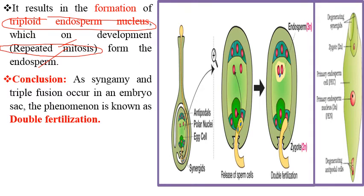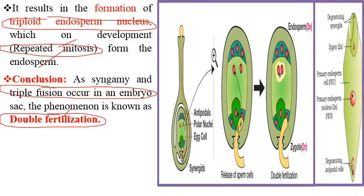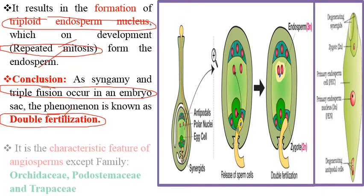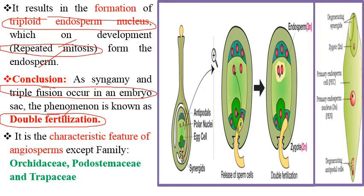Since syngamy and triple fusion both occur in the embryo sac, this phenomenon is known as double fertilization. It is a characteristic feature of angiosperms, except in the families Orchidaceae, Podostemaceae, and Trapaceae, which are exceptions where this phenomenon does not occur.